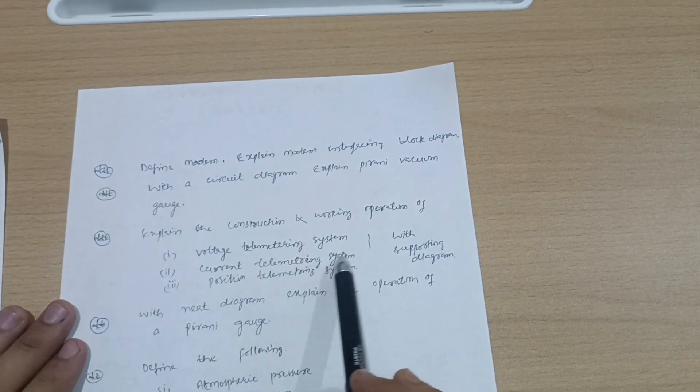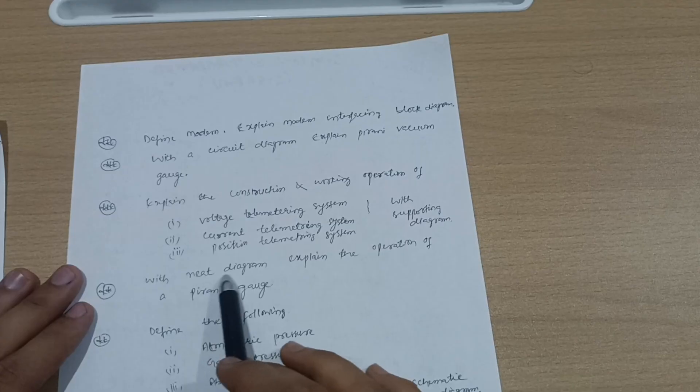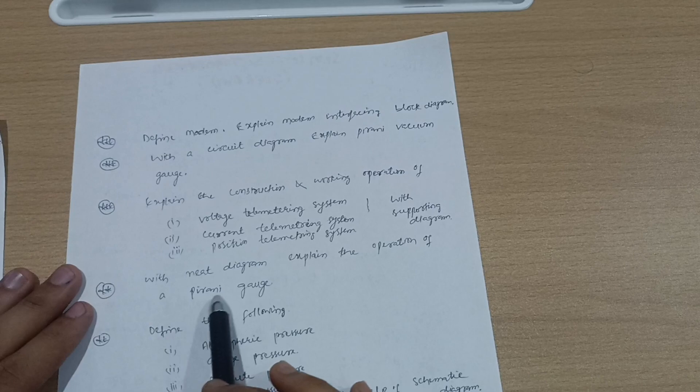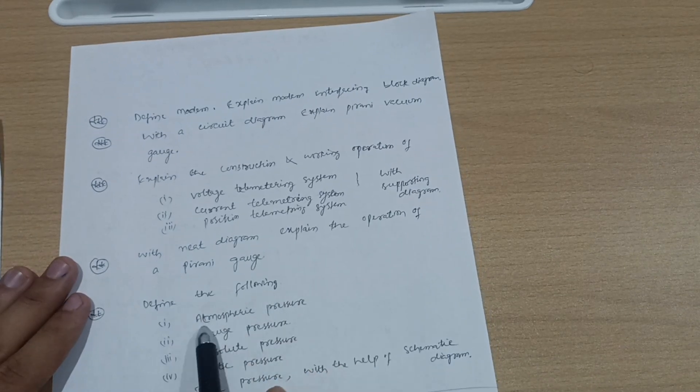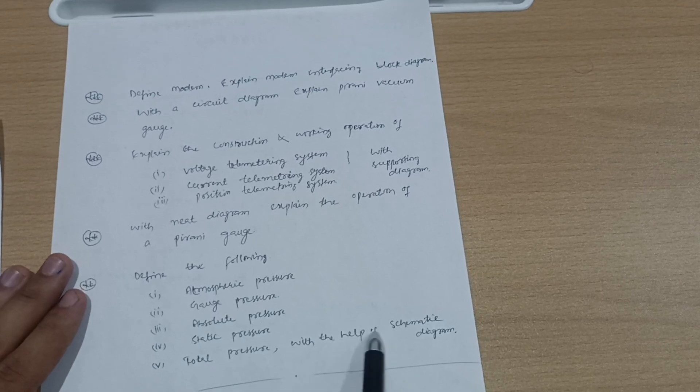With supporting diagrams and a neat diagram, explain the operation of Pirani gauge. Define the following: atmospheric pressure, gauge pressure, absolute pressure, static pressure, total pressure with the help of systematic diagram.